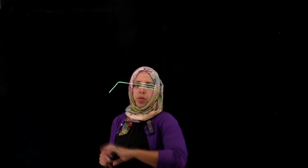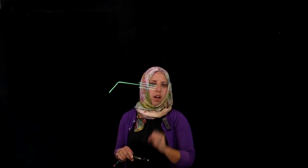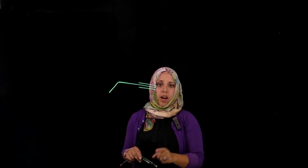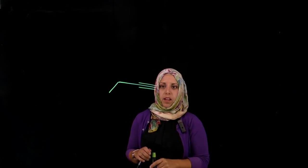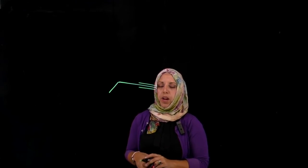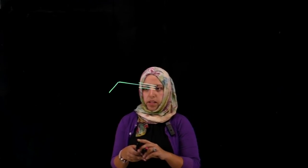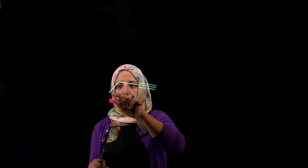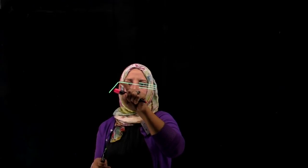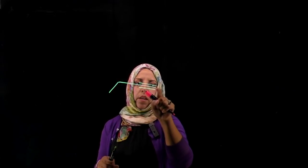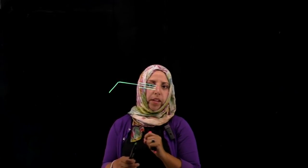Here is an alkyne, and we talked about how we can prepare an alkyne from a dialkyl halide in the presence of a base. And remember, we have one, two, three, four carbons.